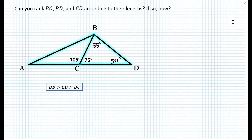Let's go back to the second problem where we had to rank segment BC, BD, and CD according to their lengths. We were able to do so by reasoning that if the angle is the largest, then the side opposite must be the longest as well. It turns out there's actually a theorem based on that. Let's formulate the theorem as our hypothesis and then prove it.